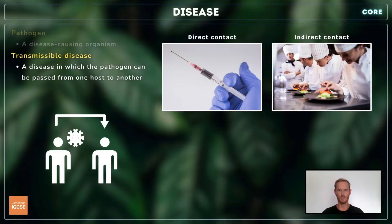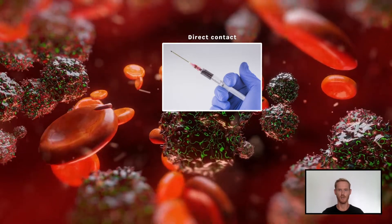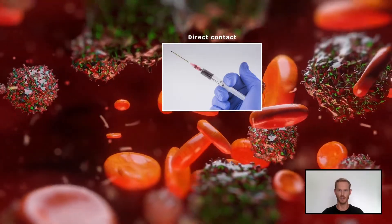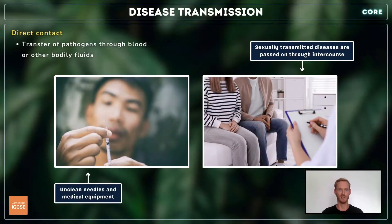A transmissible disease is a disease in which the pathogen can be passed on from one host to another, either by direct or indirect contact. Direct contact refers to the transfer of pathogens through blood or other bodily fluids — for example, being injected by a needle previously used by an infected individual allows pathogens to enter the bloodstream directly. Certain diseases are also passed on in bodily fluids during sexual intercourse.